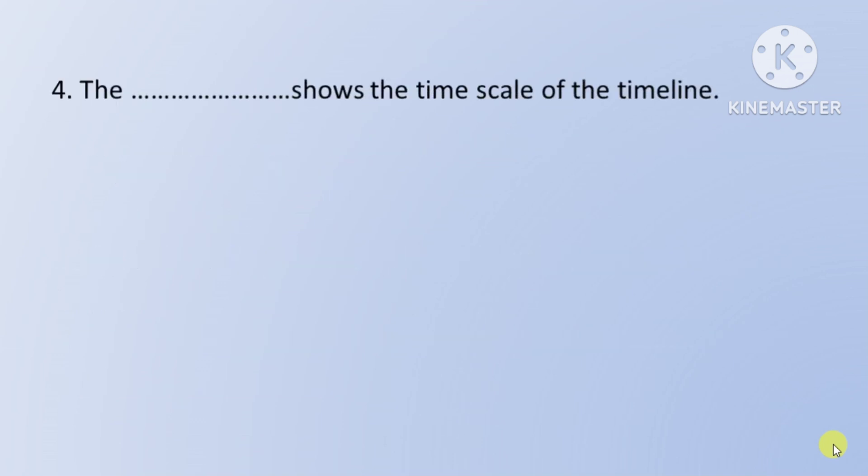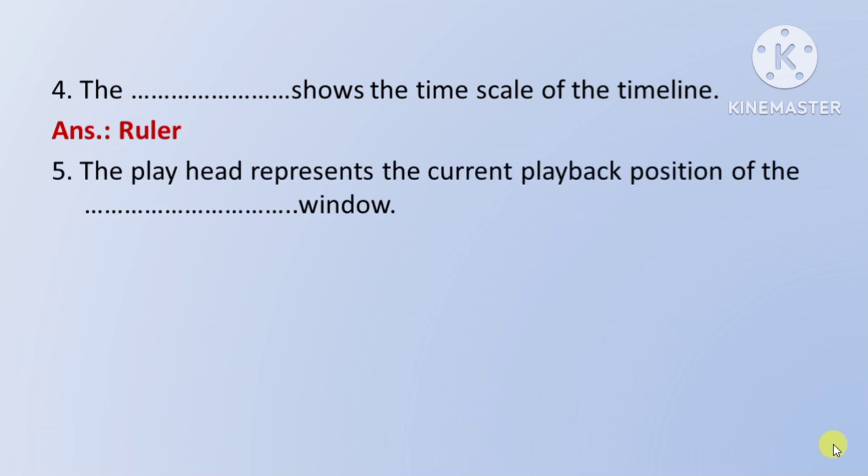Next question: what shows the time scale of the timeline — means timeline ke time scale ko dikhata hai — iska naam hai Ruler. Next: the play head represents the current playback position of the window — means play head koun se window ki current playback position ko represent karta hai.